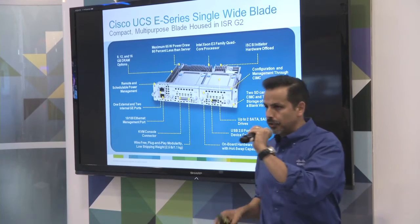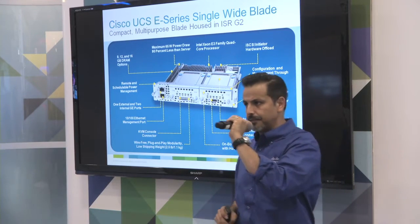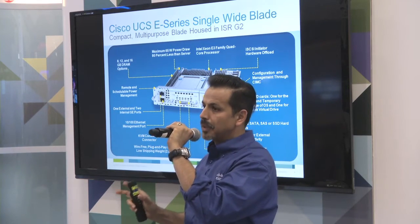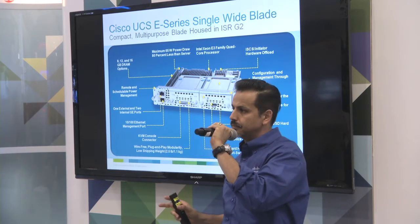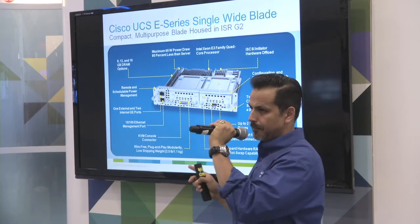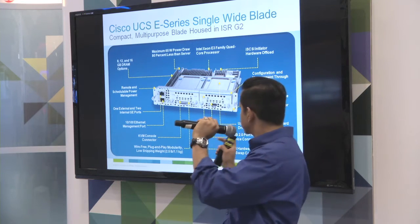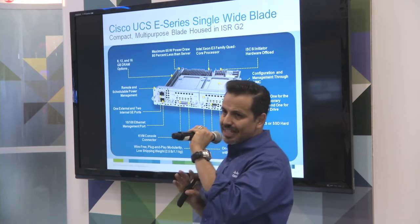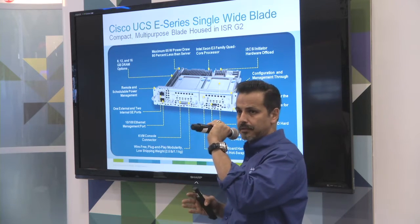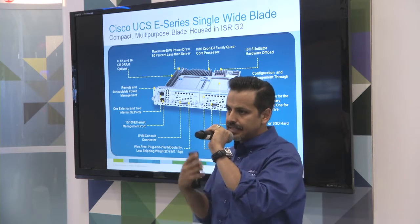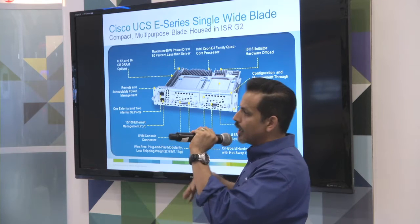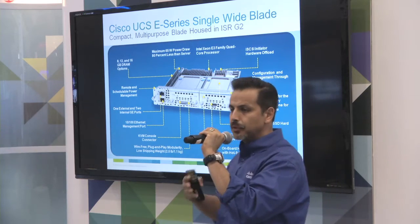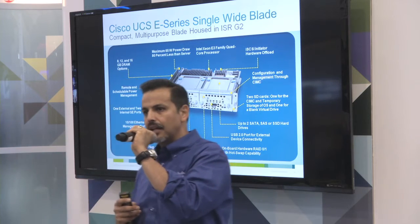We have three models of the Cisco UCS E-Series server. The first is called the single wide — it only takes up a single service module slot within the Cisco ISR router. It can go up to 16 gigs of memory, has a quad-core Intel Xeon-based processor, and you can configure it through our Cisco Integrated Management Controller. It's the same CIMC used to manage C-Series blades — you can do virtual KVM, configure RAID and BIOS, all through an HTTP-based GUI, so you can access these remotely.